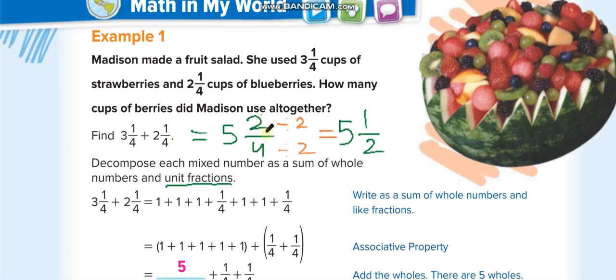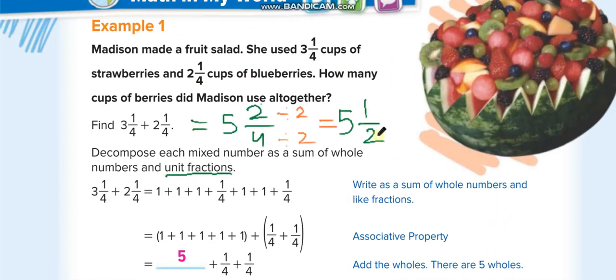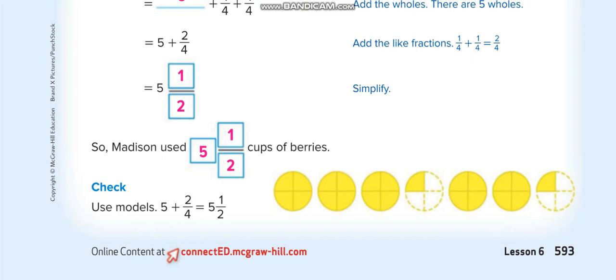Now this fraction two over four we can simplify, divide by two up, divide by two down, it will be five whole one over two. Here they're writing it in terms of unit fractions. Unit fractions means any fraction that has one in its numerator. The three they break it into one, one, one and this two, one, one. We can directly add it like this and then simplify it.